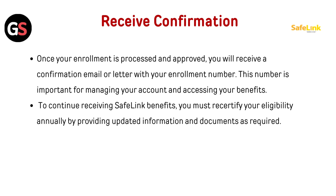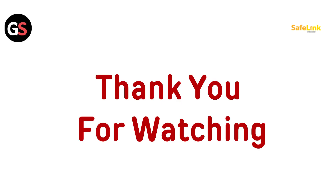Once your enrollment is processed and approved, you will receive a confirmation email or letter with your enrollment number. This number is important for managing your account and accessing your benefits. To continue receiving SafeLink benefits, you must recertify your eligibility annually by providing updated information and documents as required. Thank you for watching.